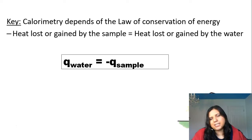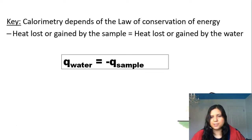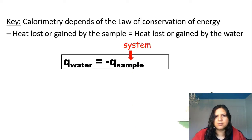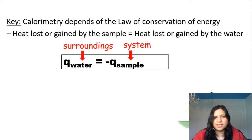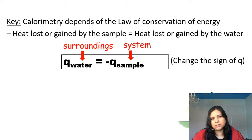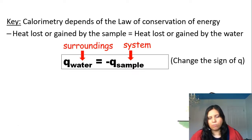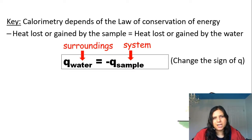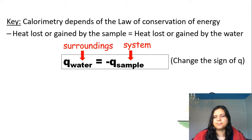We write this as: Q of water equals negative Q of sample. The sample is the system we're interested in and the water acts as the surroundings. This means that if the water experiences a negative change in energy, then the sample is going to be positive. Or if Q of water is positive, then the sample is going to be negative. We always change the sign as we go from water to sample.